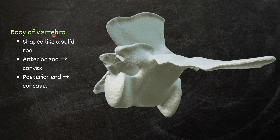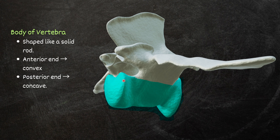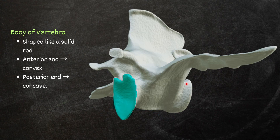First, the body of the vertebra is shaped like a solid rod-like cylindrical structure. The anterior or cranial end is convex, and the posterior or caudal end is concave.